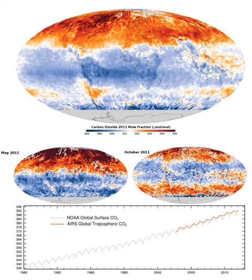Concentrations of CO2 in the atmosphere were as high as 4,000 parts per million during the Cambrian period about 500 million years ago, to as low as 180 ppm during the Quaternary glaciation of the last 2 million years.